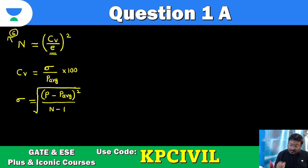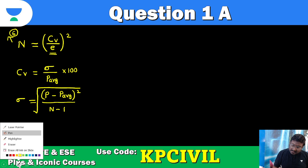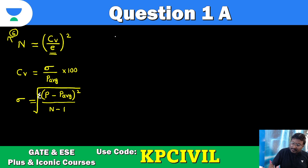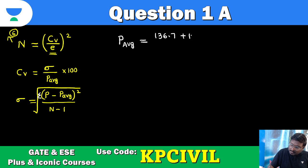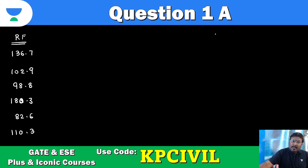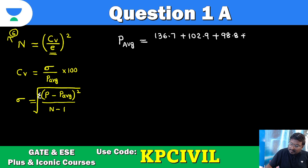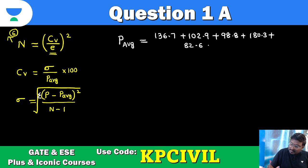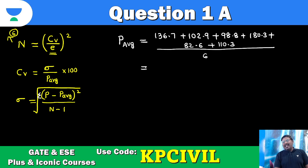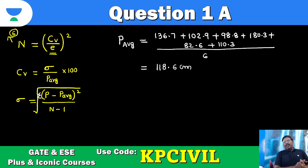To start, we first need to find the average precipitation. P_average equals (136.7 + 102.9 + 98.8 + 180.3 + 82.6 + 110.3) divided by 6. After calculation, average rainfall P_average comes out to 118.6 cm.